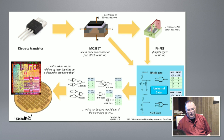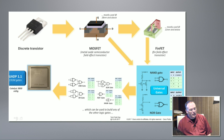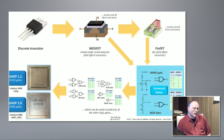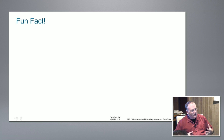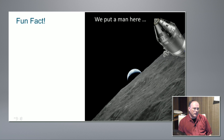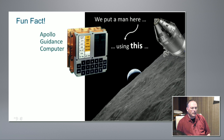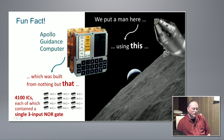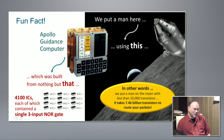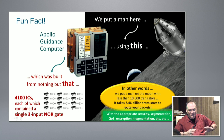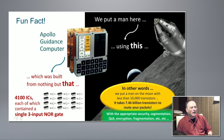UADP 1.1 has about 3 billion transistors — that's 191 million gates. UADP 2.0 is about 7.5 billion transistors, or about 270 million gates on that chip. Here's a fun fact: we put a man on the moon in 1969 using the Apollo Guidance Computer, built with about 4,100 ICs each containing a single gate. We put a man on the moon with less than 10,000 transistors, but today we use 7.5 billion transistors to route your packets in a switch — with all the security, segmentation, QoS, crypto, fragmentation, and everything else we do. Pretty amazing progression.